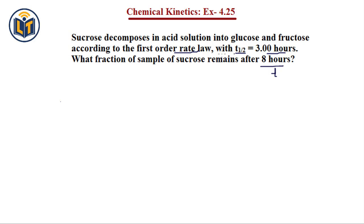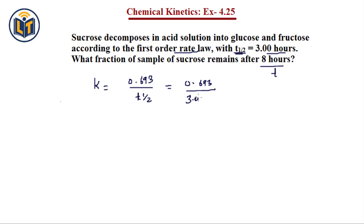For a first-order reaction, we can find the rate constant K using the relation K = 0.693 / T½. Plugging in the half-life value of 3.00 hours, we calculate: K = 0.693 / 3.00 hours = 0.231 per hour (s⁻¹ in appropriate units). This gives us the rate constant for the decomposition.